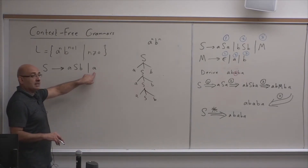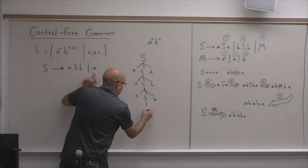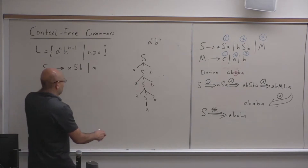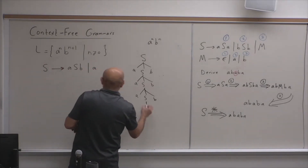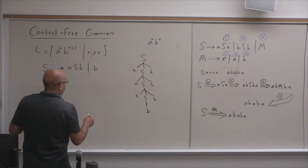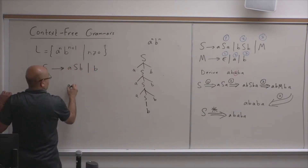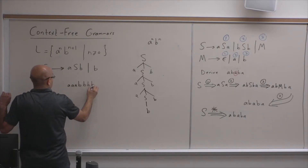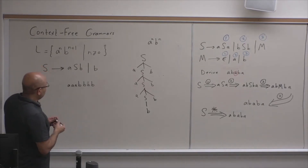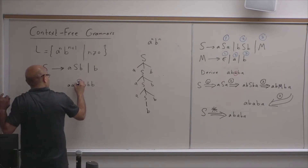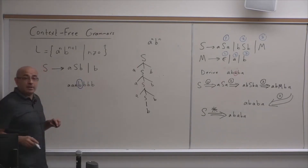Eventually you'll have to use the base case, so you'll put an a — actually you need a b in the middle. And this will give you a, a, a, b, b, b, b. So in this case, you are thinking of the b as the symbol in the middle.